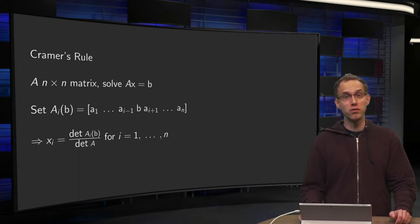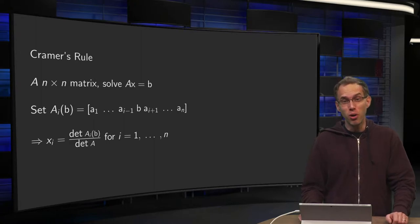Cramer's rule allows us to find the solution of a linear system using determinants. But why do we want to do that? We can use row reduction.